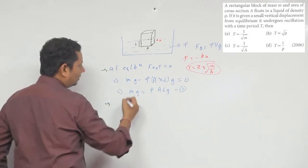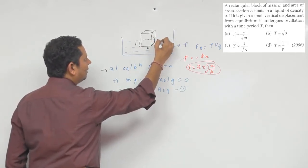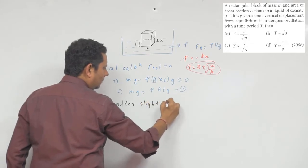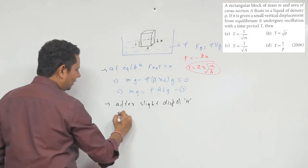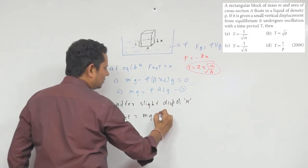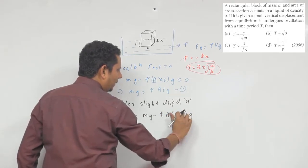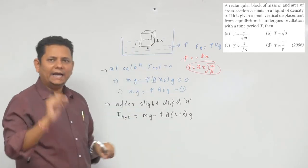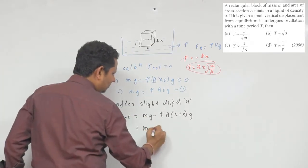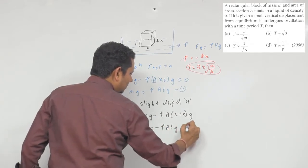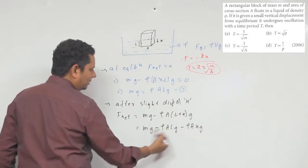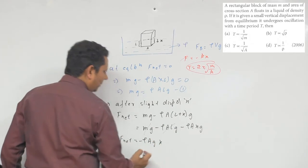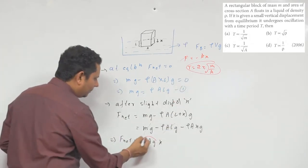Step 2: After a slight downward displacement of x, the net force becomes mg minus ρ·A·(L+x)·g. Expanding: mg − ρALg − ρAxg. Using the first equation, mg and ρALg cancel, giving F_net = −ρAg·x. Comparing with F = −kx, we get k = ρAg.